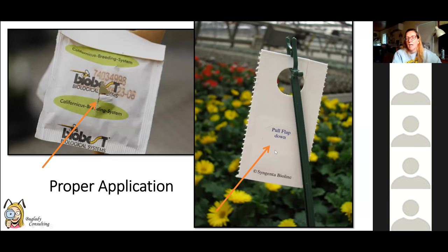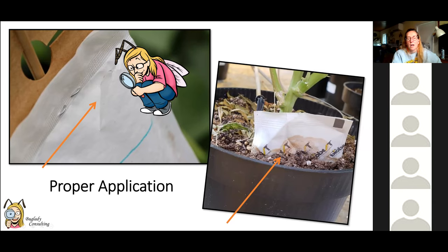Make sure you give employees very clear directions on applications. For blister packs, you have to open them — insects won't chew their way out. Sachet positioning is critical: place them in the canopy of the plant near where the pest issue is, toward the middle, so mites can slowly release over four to six weeks with the right humidity. Poorly positioned or ripped-open sachets can drown the mites or release them all at once.